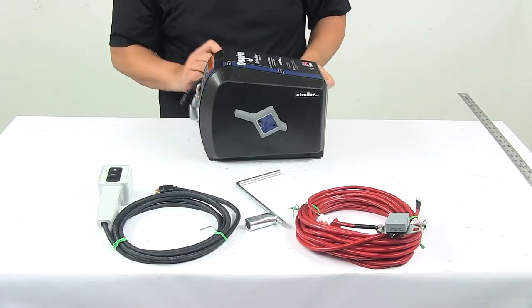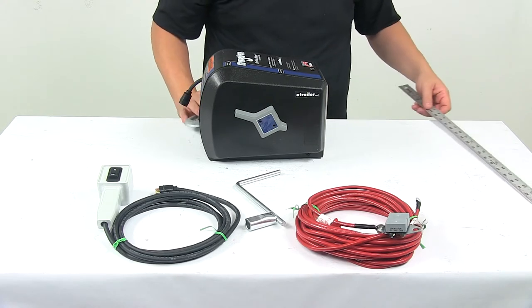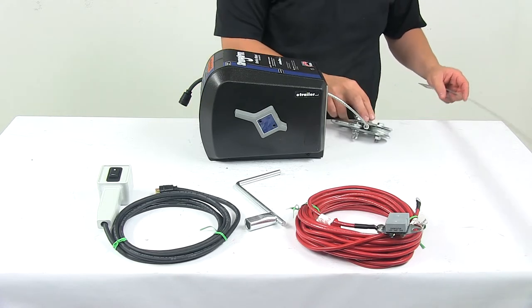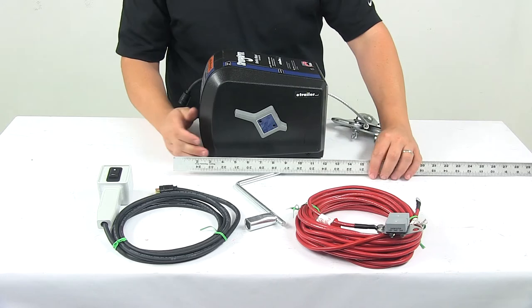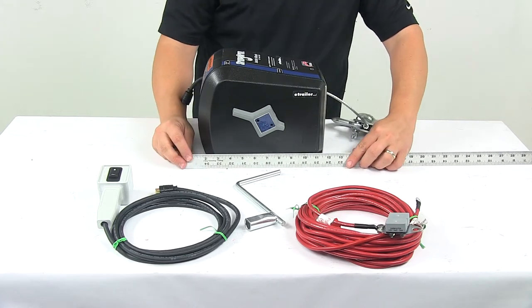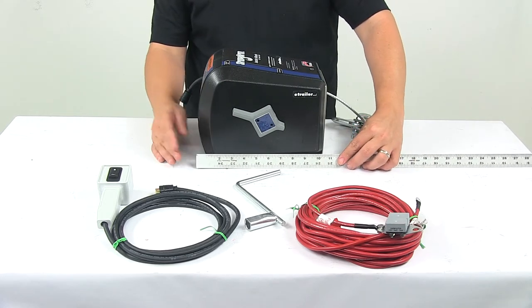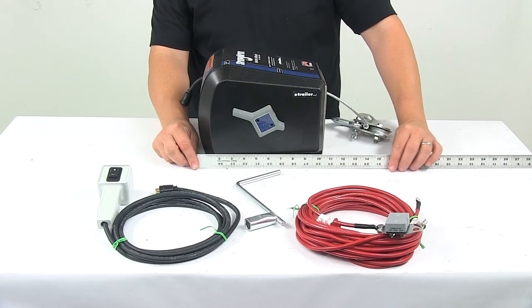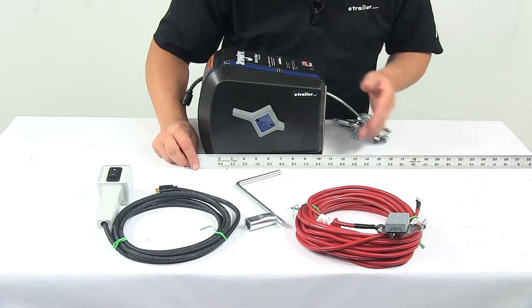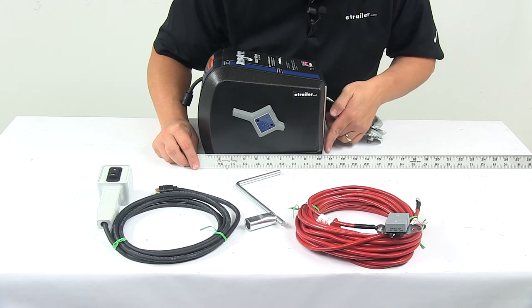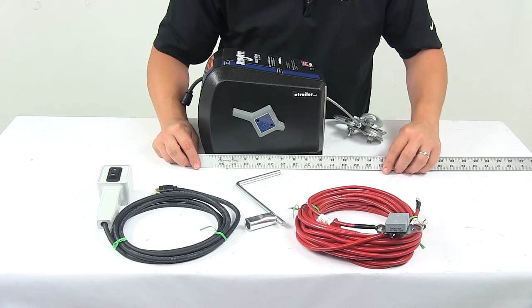When it comes to the overall measurements of the unit, if we take a measurement of the overall length. So I'm going to measure from the back of the unit to the front of the unit. And I'm getting a measurement of about ten and three quarter inches.